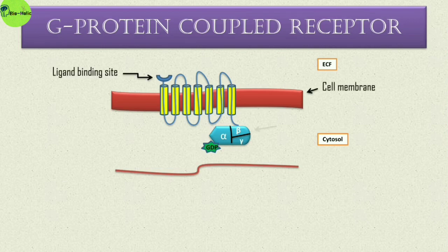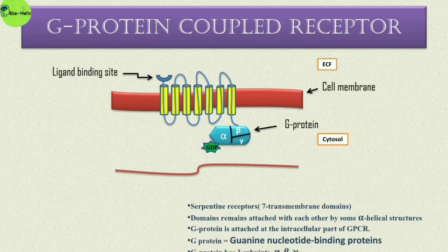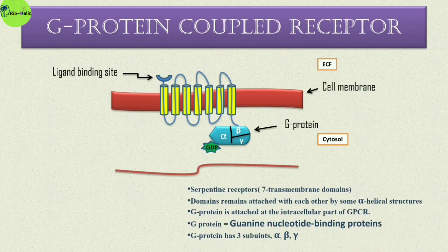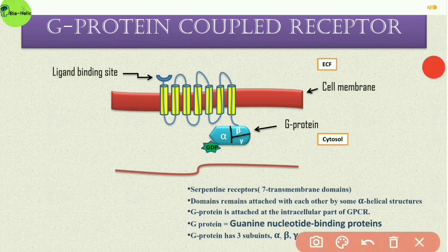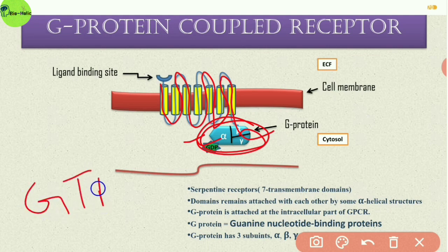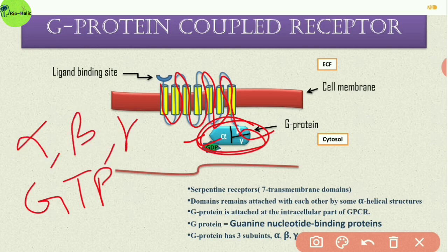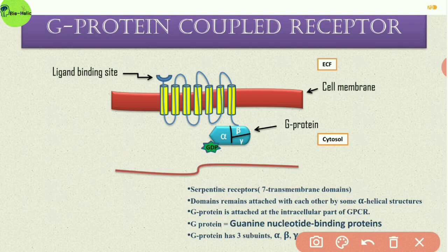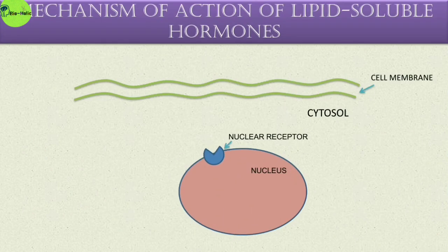For GPCR: this is the ligand binding site of the seven transmembrane protein structure forming the GPCR — for this reason GPCR is also known as the serpentine receptor. These transmembrane domains are connected with a G protein, also called guanine nucleotide binding protein, meaning they always bind to GDP or GTP. This G protein has three subunits: alpha, beta, and gamma.